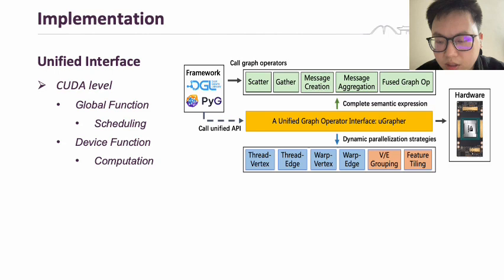The first part is a global function that determines scheduling, and the second part is a device function that determines computation. The device function dynamically combines with the global function as a template parameter, allowing for different scheduling strategies for different operators.